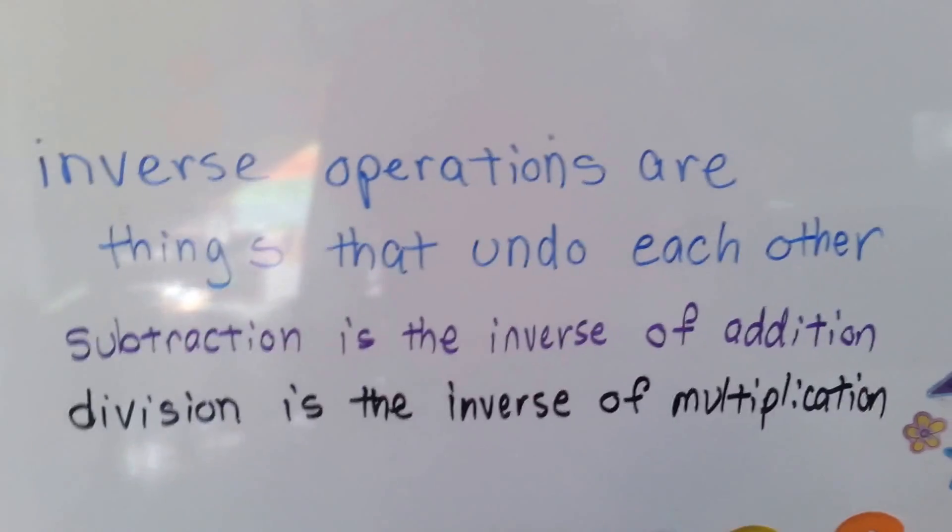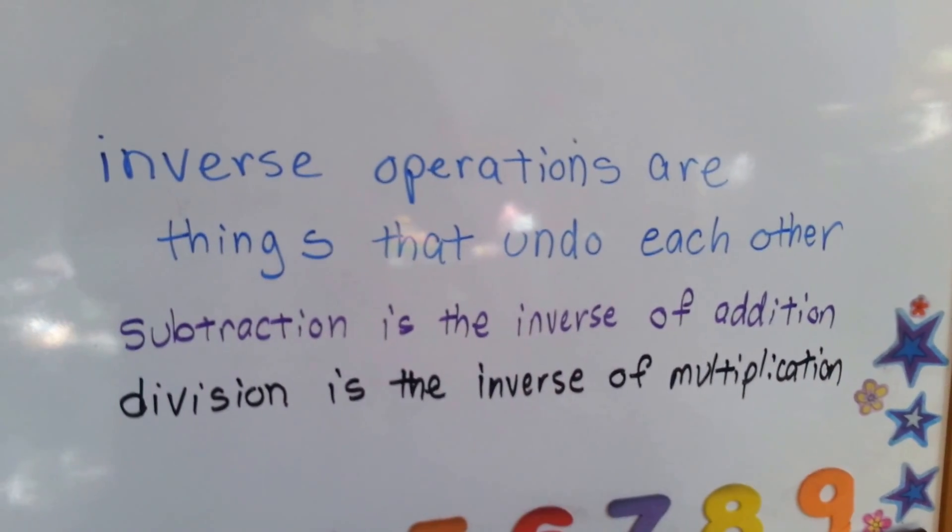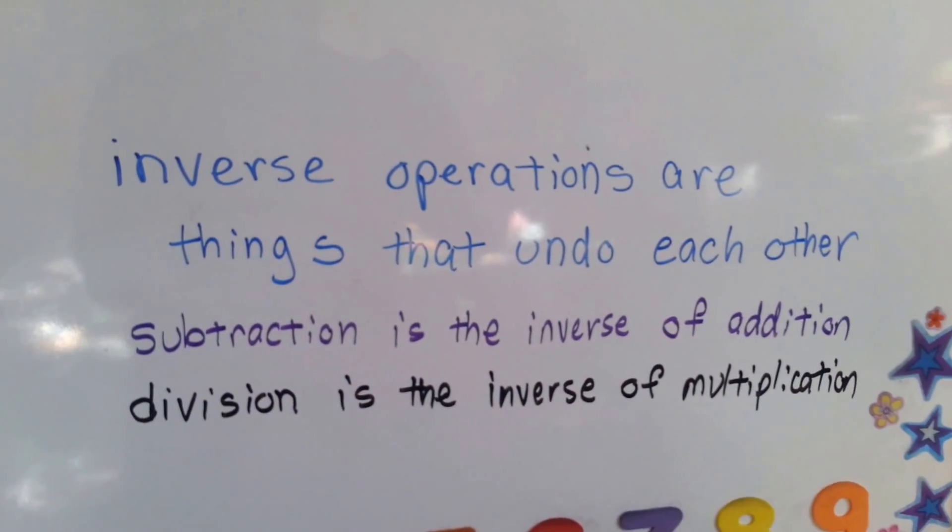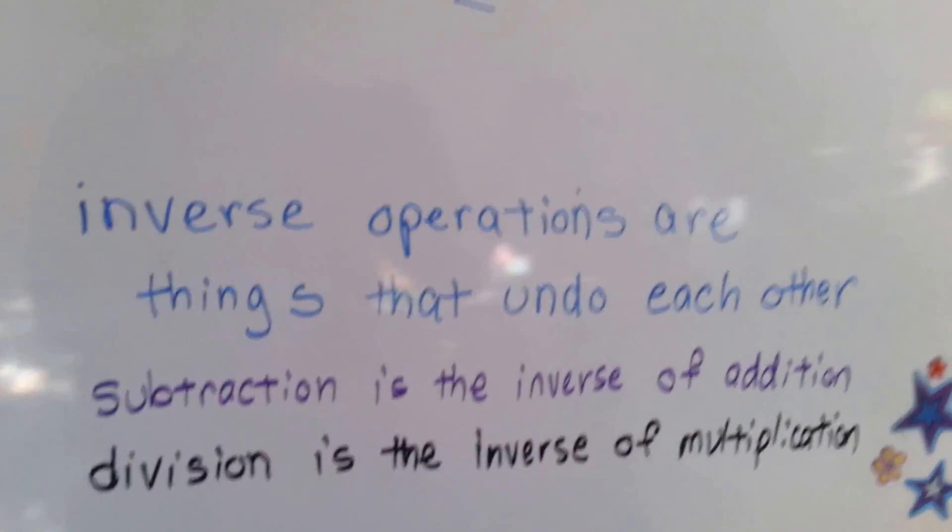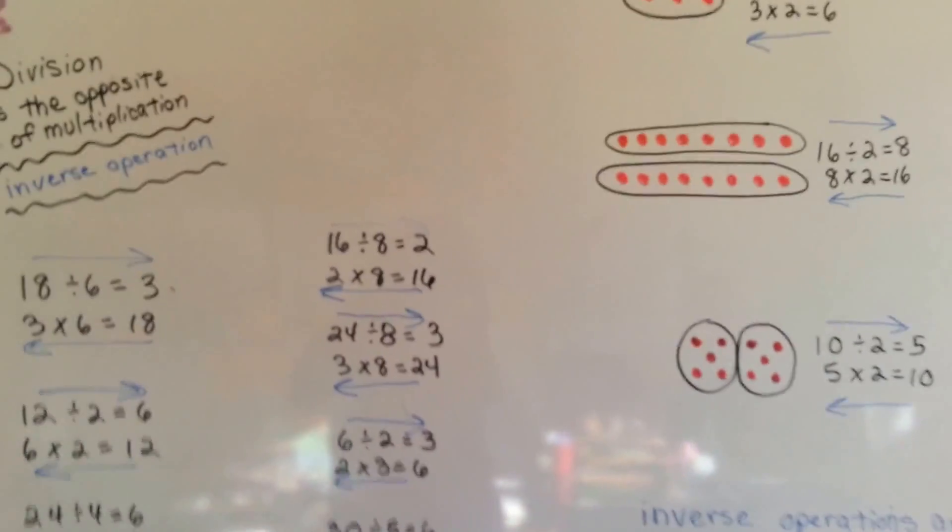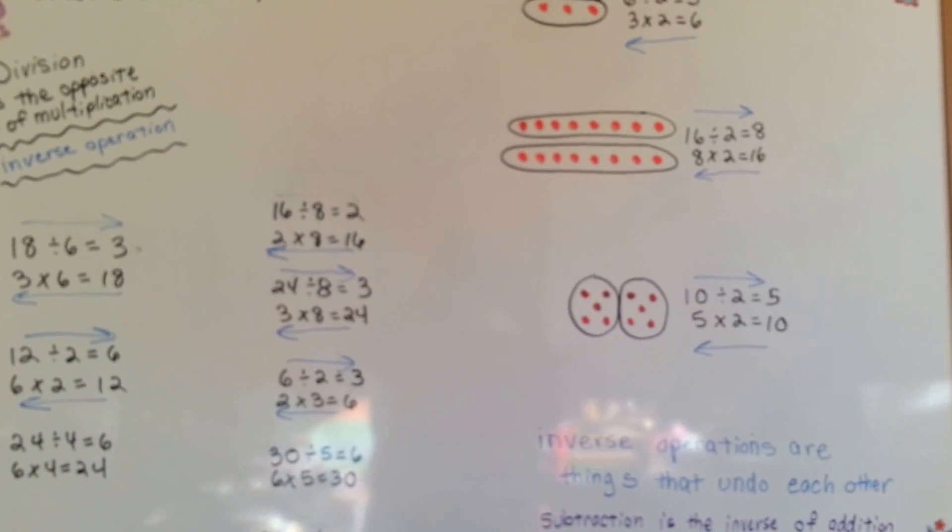So inverse operations are things that undo each other. Subtraction is the inverse of addition. Division is the inverse of multiplication. That's what inverse operations are, and this is how division can undo multiplication.